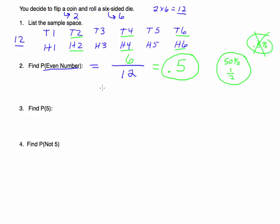Now let's find the probability of getting a five. Try to pause the video and work it out. The number of items in the sample space is still twelve. The outcomes that have a five — there are two of them. So we have two out of a total of twelve.